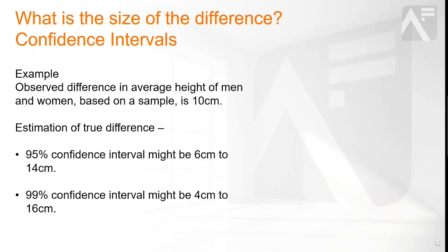Confidence intervals are expressed as a percentage confidence that the true difference lies between these values. For example, if we had two samples of heights and we observed a difference of 10 centimetres in the means of these two samples, we might want to know more about the size of the true difference. Depending on the number in the sample and the range of heights, we might calculate a 95% confidence interval and get a range with a true difference of 6 centimetres to 14 centimetres. This means there is 95% confidence that the true difference between the groups lies between 6 centimetres and 14 centimetres.